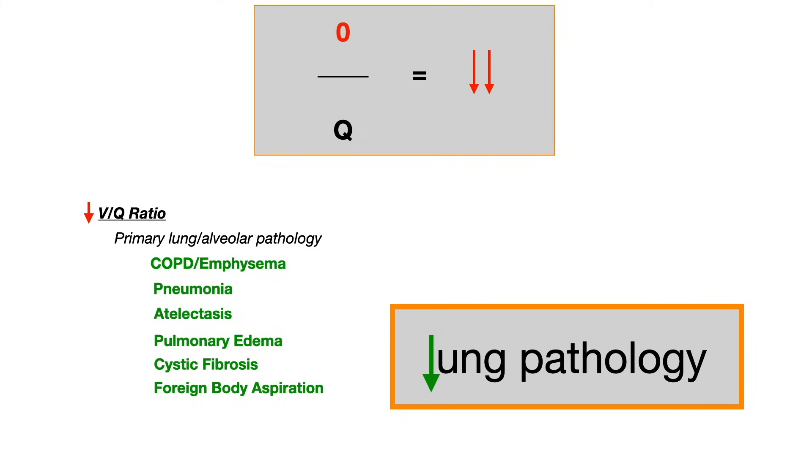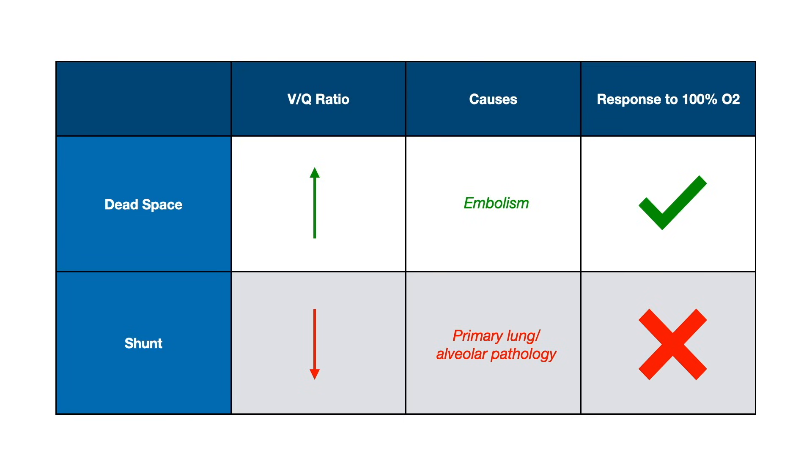But let's just do a summary chart here to wrap up. So again, VQ ratio, when it's increased, it's dead space. When it's decreased, it's a shunt. What causes this? Dead space is an embolism, most commonly a PE, but also other types of emboli. And a shunt is going to be a primary lung issue, COPD, cystic fibrosis, atelectasis, etc. Is the patient going to respond to 100% oxygen in dead space? Yes. In shunt, because of hypoxic vasoconstriction? No. If you know this table, you're golden.